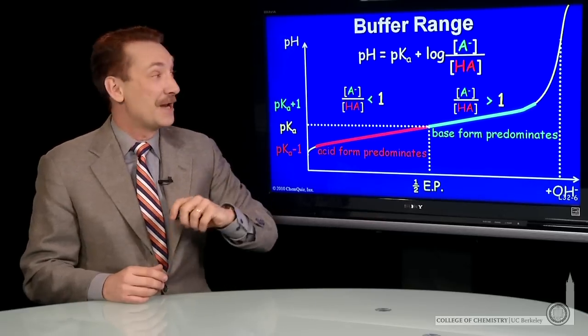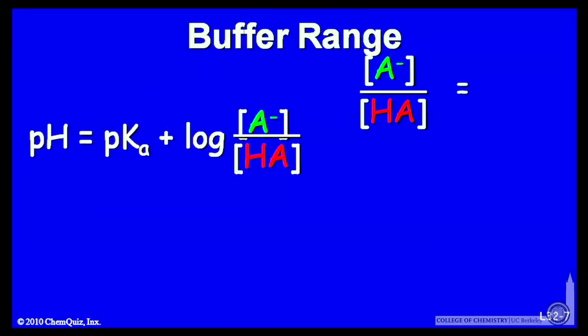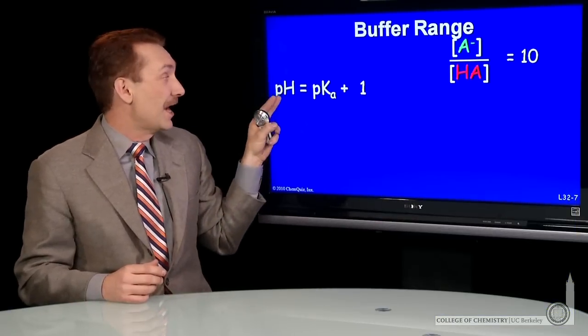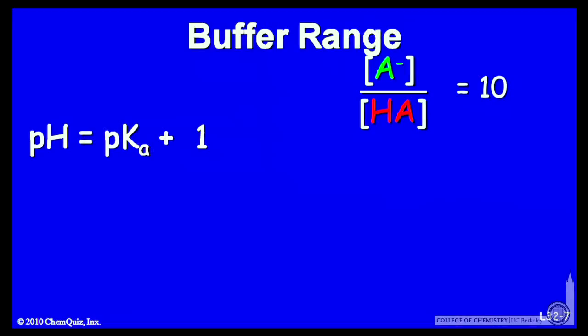So let's look at that in more detail. Here's our Henderson-Hasselbalch expression. When this ratio, A minus over HA, is 10, so there's 10 times as much base form than acid form, then the log term is 1. You're at pHs of 1 greater than the pKa.